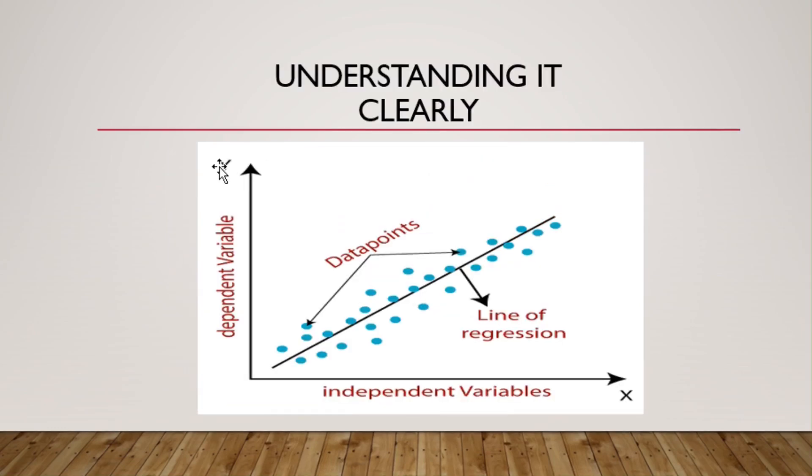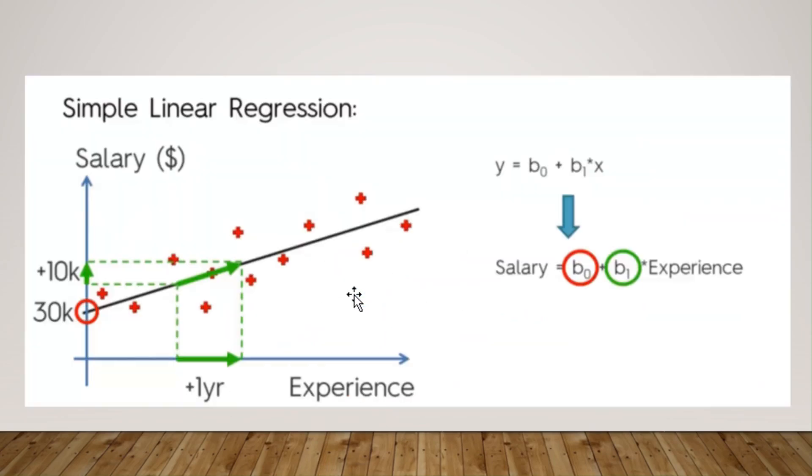And here we have taken a scatter plot between independent variables and dependent variables of the training dataset, where these data points are nothing but the actual values of the training dataset. And on the basis of this training dataset, we have obtained this best fit line.